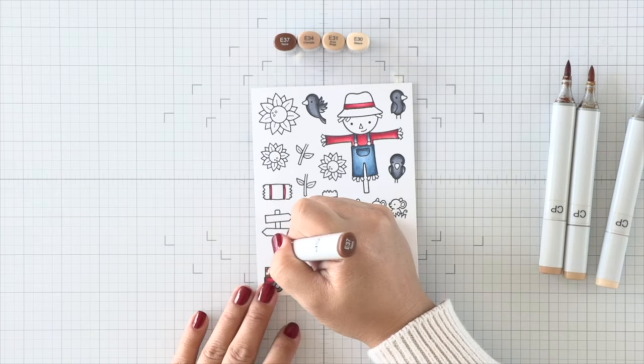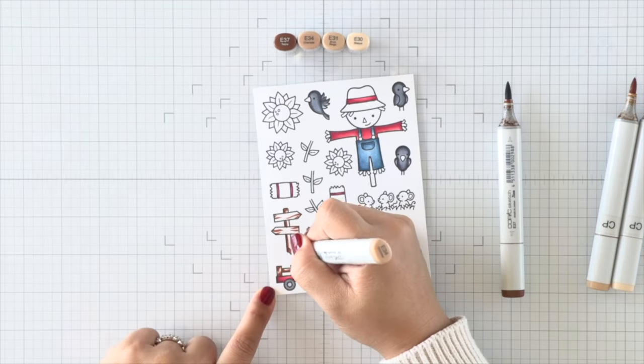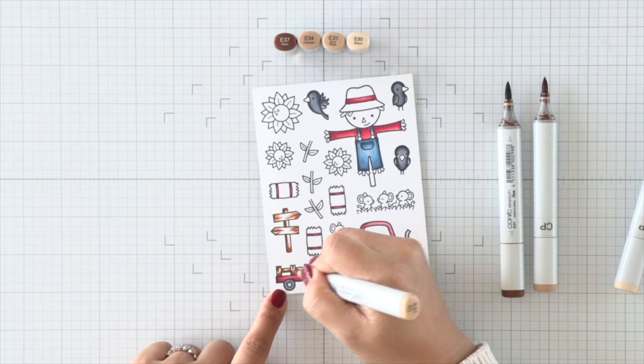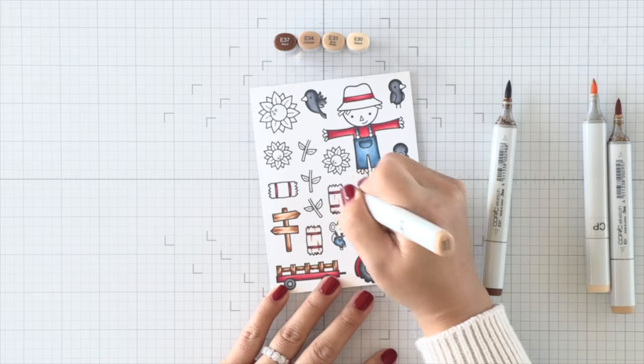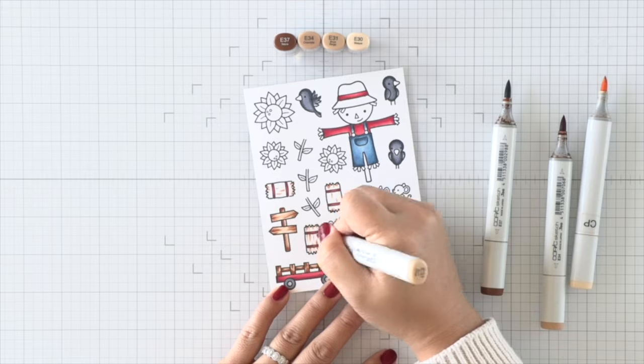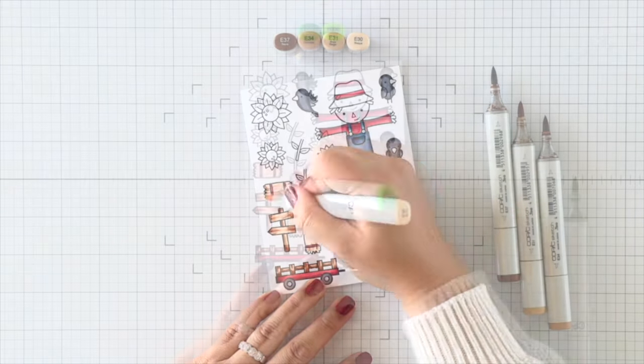And once I'm done with all of that, I'm going to pull in some browns and color the wood. And for wood I like to do lots of texture, so I do a lot of flicking, less so blending. So even if it doesn't look perfect, that texture makes it look a bit more realistic and intriguing.